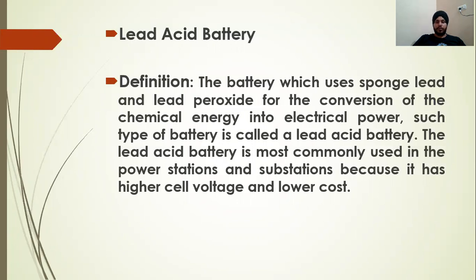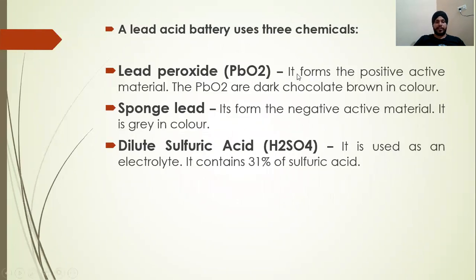The main chemicals are: first, lead peroxide (PbO2) for the positive plate, which is dark chocolate brown in color. Second, sponge lead for the negative plate, which is grey in color. Third, dilute sulfuric acid (H2SO4) as the electrolyte in a ratio of 60% water and 40% sulfuric acid. These chemicals react to produce electrical energy.